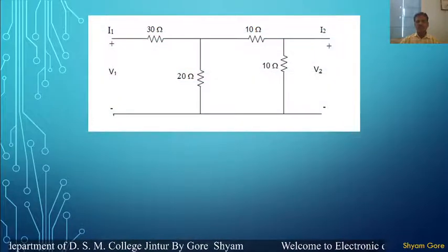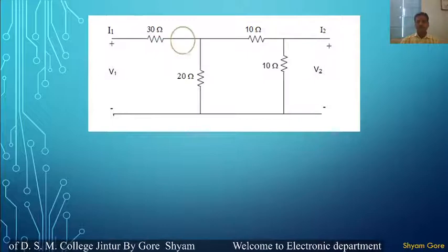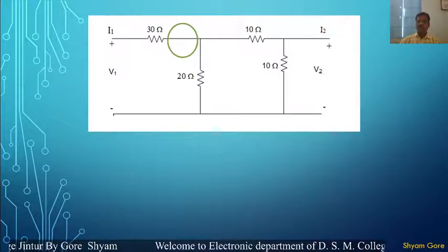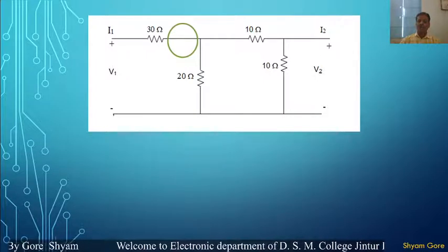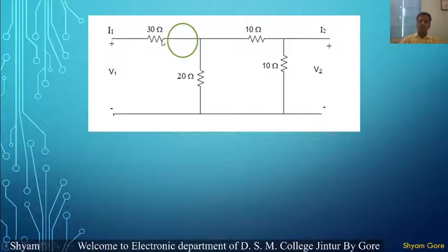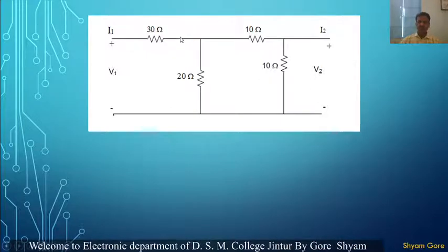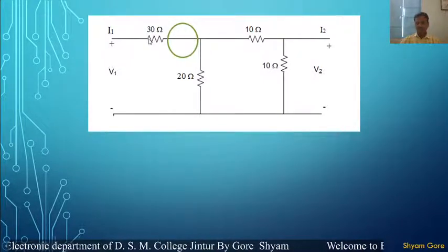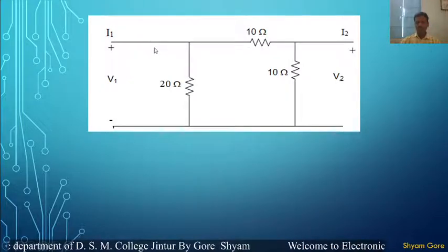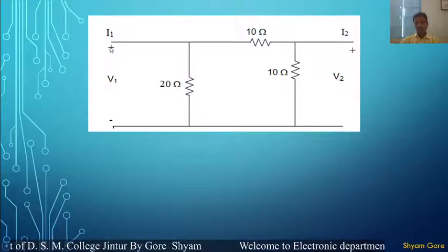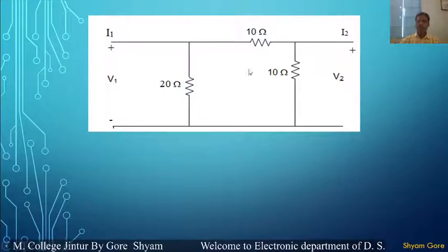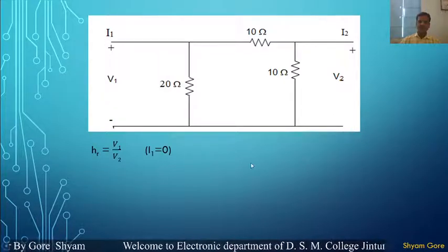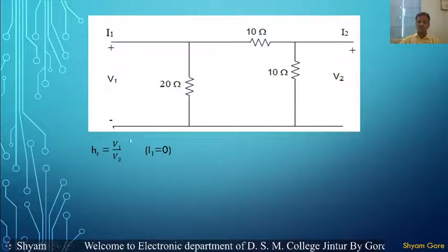Now let us see the original circuit. Let us find out the reverse voltage gain H_R, and the output admittance H_O can be found when we open the input terminal of the circuit. When we open the input, the 30 ohm resistance is cut from the circuit and the circuit becomes the final circuit with 3 resistances remaining. H_R is equal to V1 divided by V2 when I1 is equal to 0, that is the input current is equal to 0.